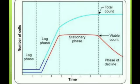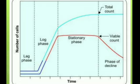Stationary phase. After log phase, the bacterial growth changes almost completely due to exhaustion of nutrients and accumulation of toxic products. The number of progeny cells formed is just enough to replace the number of cells that die. Hence, the number of viable cells remains stationary as there is almost a balance between dying cells and newly formed cells. But the total count keeps rising.